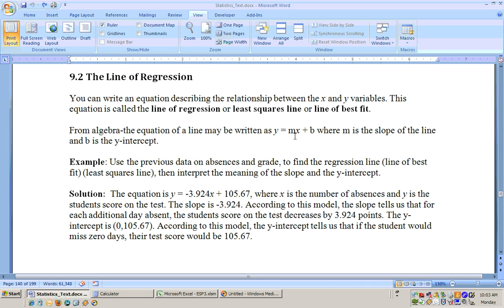Now, they may use different values sometimes in statistics for the slope instead of the m. Sometimes they use b with a little sub-zero, and your y-intercept, they use b with a sub-1. But either way, the number before the x, when you have an equation of y equals something times x plus b, the number before the x is the slope, and the number at the end is the y-intercept.